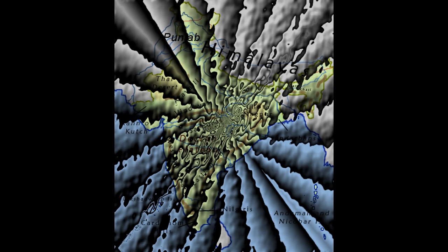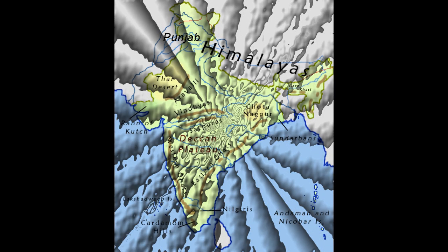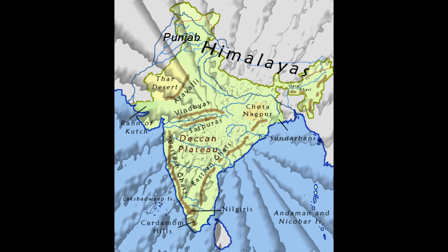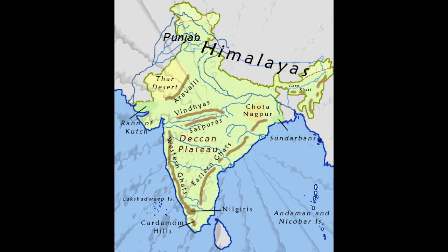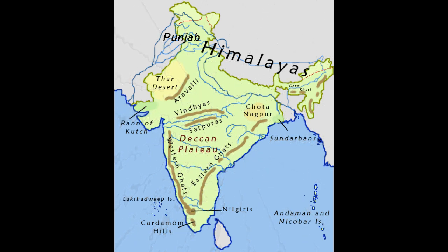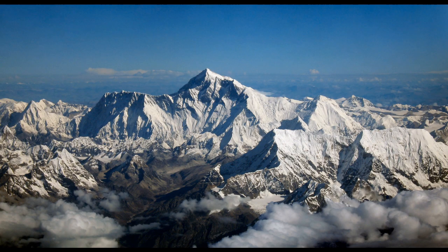What actually is relief? Relief refers to the height and shape of the earth's surface — nothing but height and shape of the earth's surface. Relief is nothing but the vertical and horizontal dimensions of the land surface.